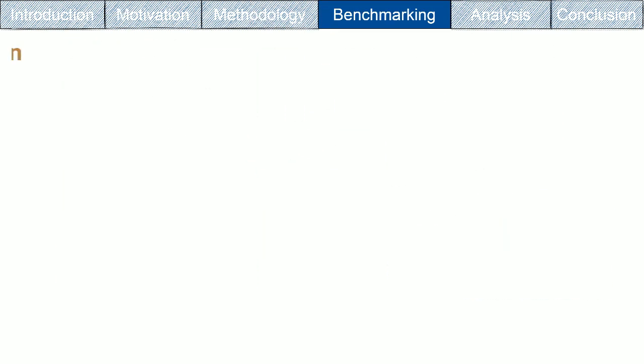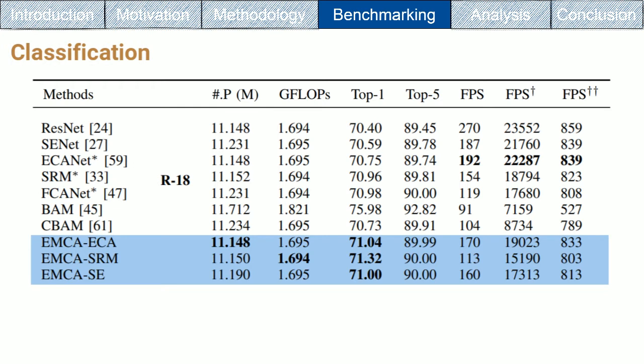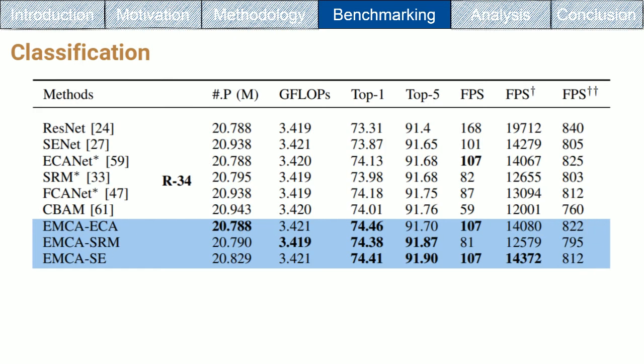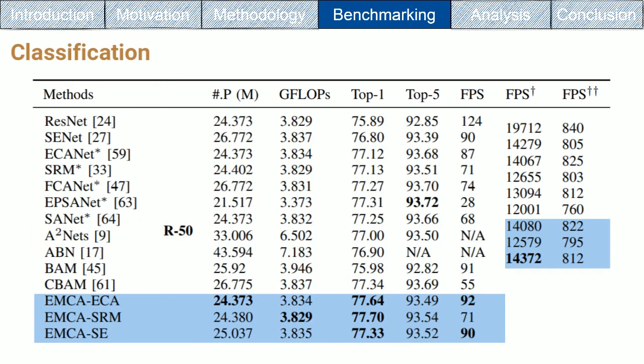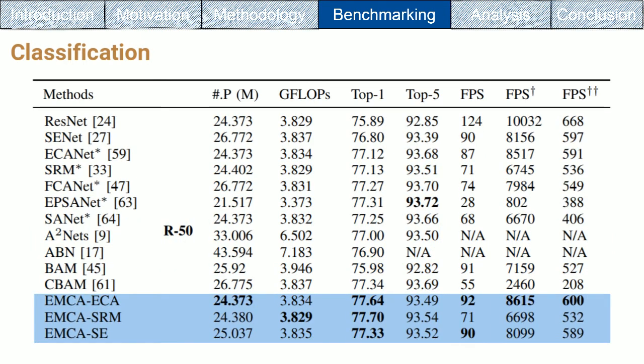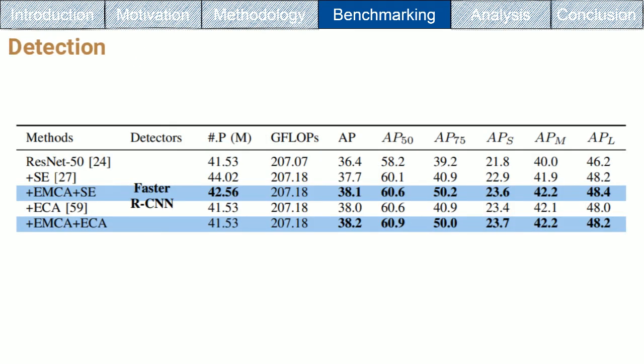For the classification task, we use the well-known benchmark ImageNet. Three variants of the local channel attention module are explored in EMCA module: SE-Net, ECA-Net, and SRM-Net, alongside three variants of ResNet: ResNet-18, ResNet-34, and ResNet-50. As shown in the results, EMCA module boosts the accuracy by 1% on average.